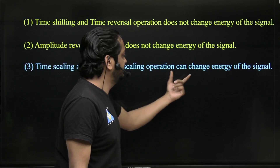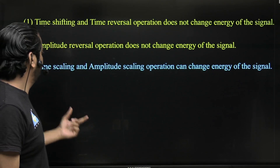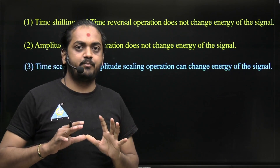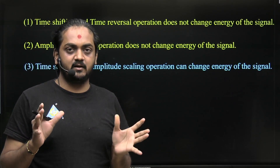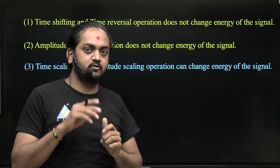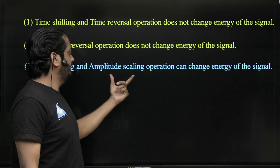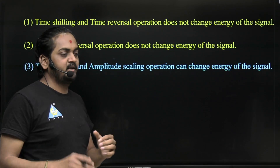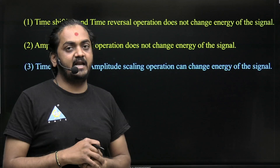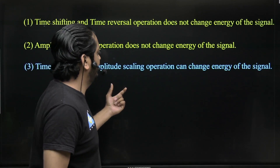Now, time scaling and amplitude scaling operations can change the energy of the signal. In time scaling there will be expansion or compression of the signal, meaning the width will increase or decrease, so there is a change in energy. And in amplitude scaling there will be amplification or attenuation of the signal, which is a change in amplitude, that's why this operation changes the energy of the signal.